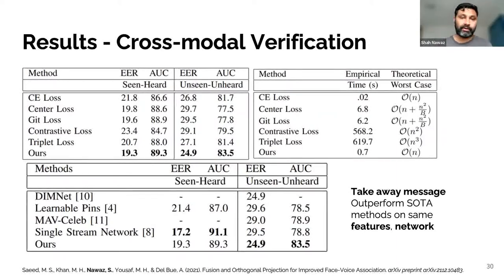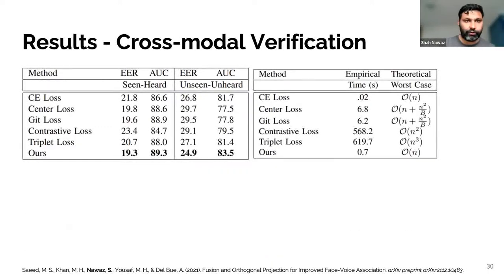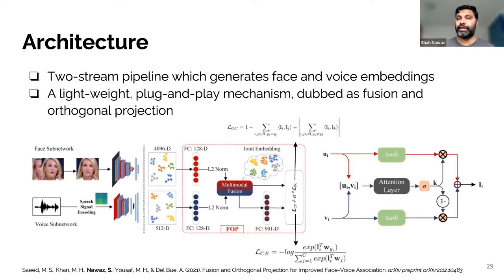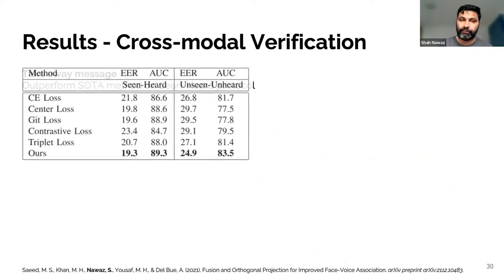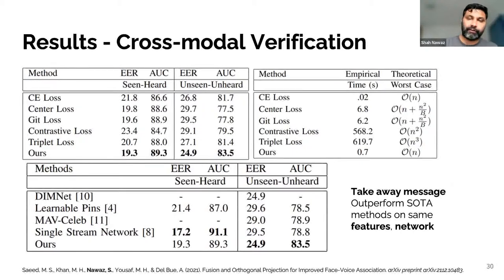This is an extremely important result because existing work does not provide a fair comparison among different methods. In this particular work, we kept the face-voice features and the same network constant, and only varied the loss function, enabling a fair comparison among existing loss functions available in the literature for face-voice association tasks. Our loss function outperforms all existing face-voice loss functions available in the literature, and we have better empirical and theoretical complexity performance for our loss function.